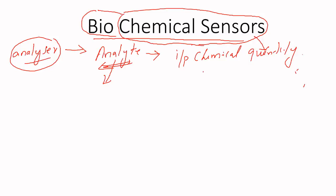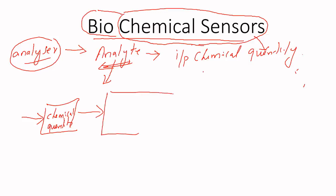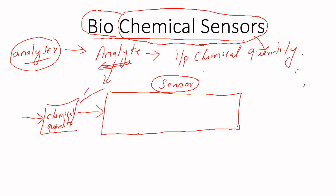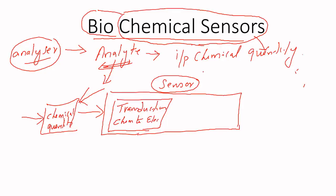The input is a chemical quantity. You will have a sensor which can understand the changes in that chemical. The sensor will have a section called transduction. Transduction converts the chemical to electrical, or to either electrical or any other form like acoustical or optical.